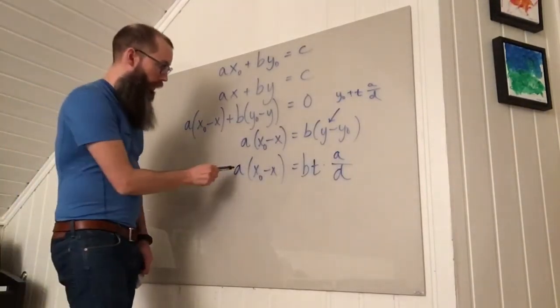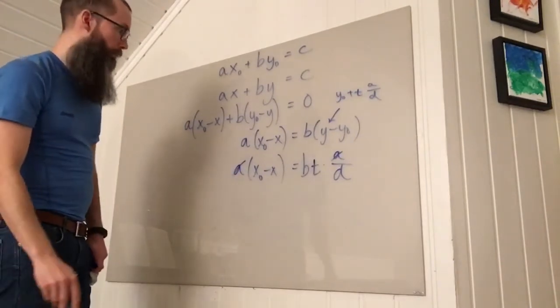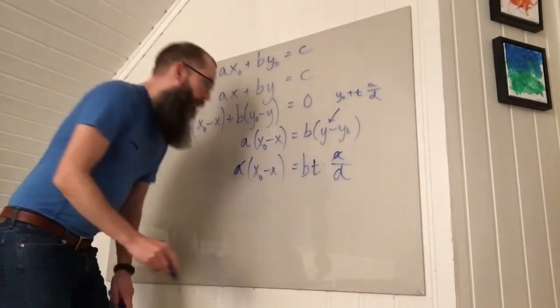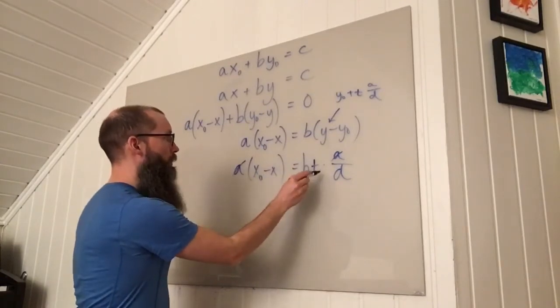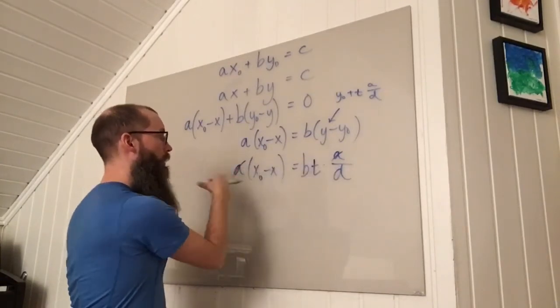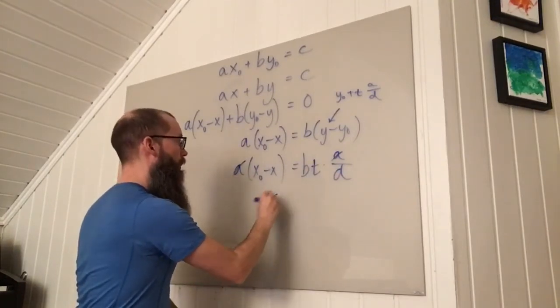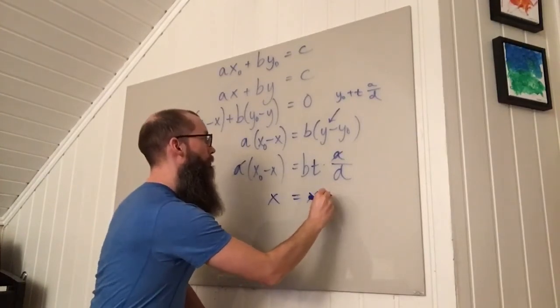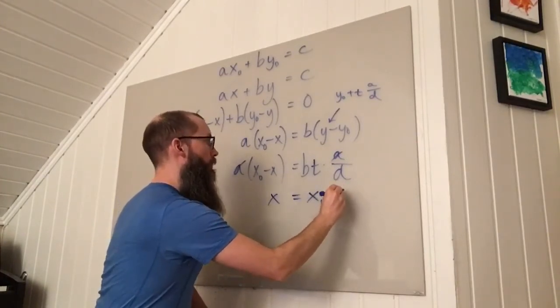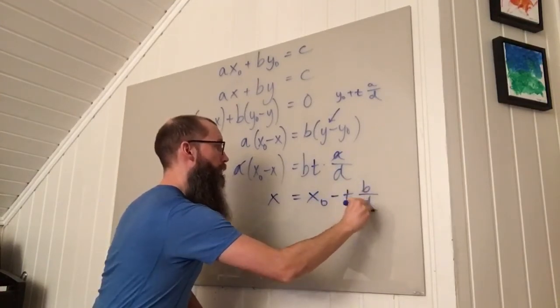And now I see that A cancels. I can shorten, divide on both sides by A. And then solve for X. I will put X on this side, this term on the other side, and read from right to left. That leaves X equals X0 minus T times B divided by D.